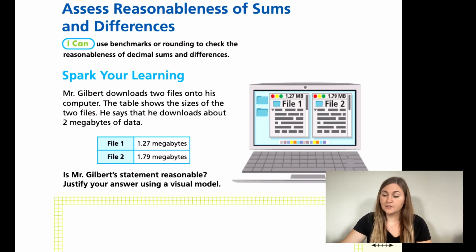We start out with a Spark Your Learning and it says Mr. Gilbert downloads two files onto his computer. The table shows the sizes of the two files. He says that he downloads about two megabytes of data. In this little blue rectangle, we have file one and file two. File one says 1.27 and file two says 1.79. So Mr. Gilbert said the two of those combined was about two megabytes. So we have to show whether that's true or false.